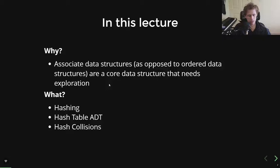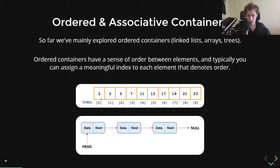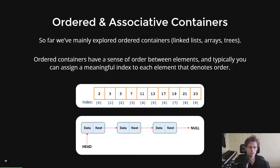Today we're going to explore hashing and contrast it to older or sequential data structures. We're going to talk about what hashing is, the data structures that use hashing, and some of the challenges associated with those data structures. Before we get into that, it's important to distinguish between ordered and associative containers, because most containers we've dealt with so far — maybe with the exception of graphs — are ordered containers, or what we sometimes call sequential containers.